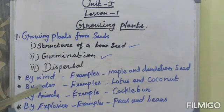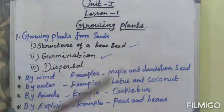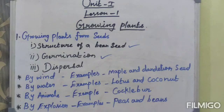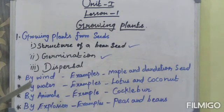Second: dispersal by water. Seeds of plants such as lotus and coconut are spongy or have a fibrous covering, which helps them to float on water. Water carries these seeds from one place to another. Examples: lotus and coconut.